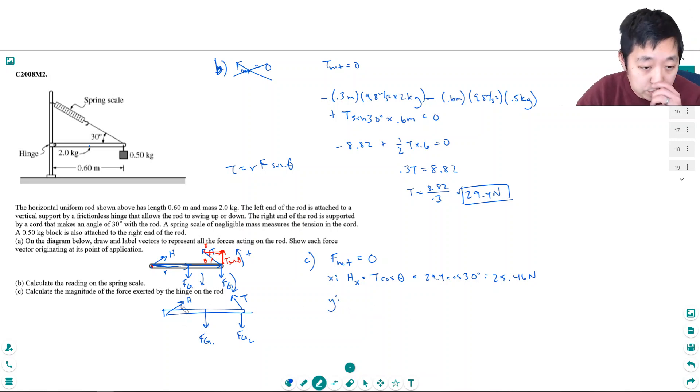And in the y direction, I have hy plus the tension in the y direction, which is t sine theta, has to equal the sum of these two gravities. It would be fg1 plus fg2. So hy is just equal, if I can bring this t sine theta to the other side. fg1 is 2 kilograms times 9.8 meters per second squared. Plus 0.5 kilograms times 9.8 meters per second squared. minus t, which is 29.4 newtons, times sine of 30 degrees, which is one half.